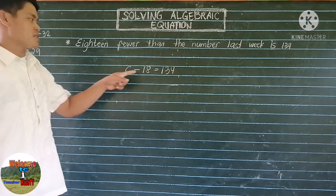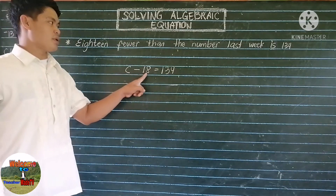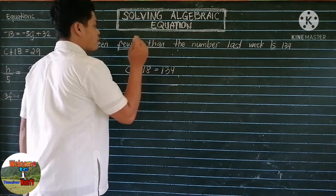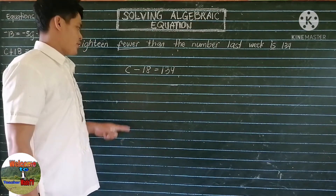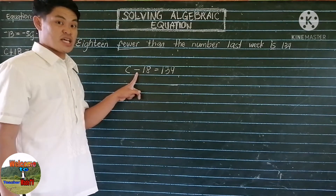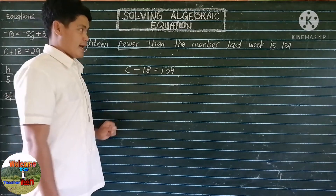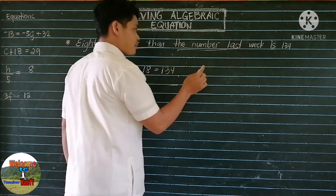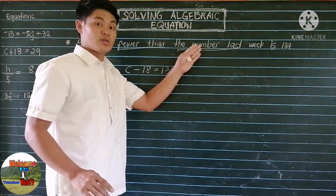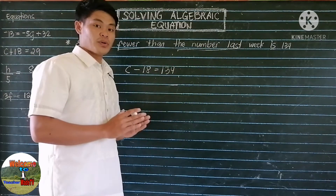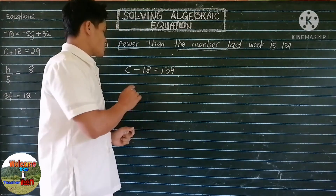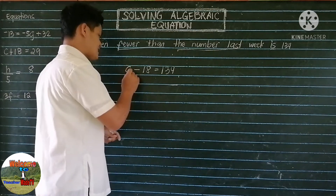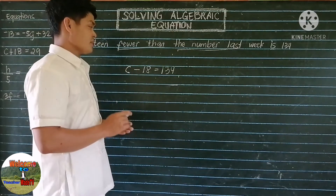Here, 18 represents the number 18, and the phrase 'fewer than' represents the minus sign. The phrase 'number last week' represents an unknown number. For an unknown number, we will use any variable — I prefer to use C.